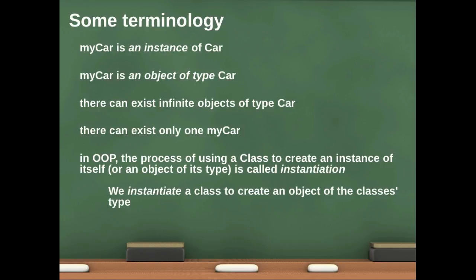So some terminology about all of this. We say that myCar is an instance of Car, and we kind of talked about that before. myCar is also an object of type Car, and we've already said that instance of and object of type is interchangeable terminology.